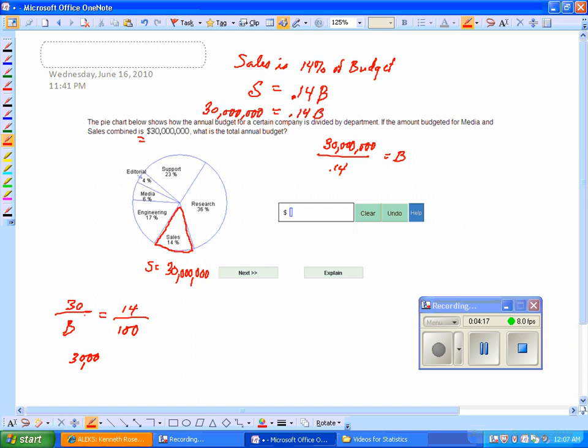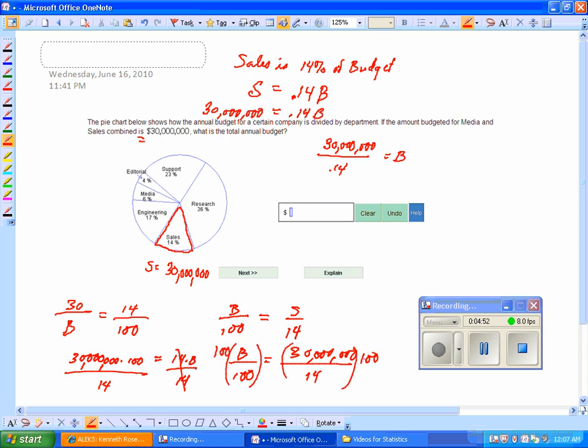You could also say B is to 100% like S is to 14%, but S we know is 30 million. To get that 100 off the bottom, we would multiply 100 on both sides, and the hundreds would cancel.